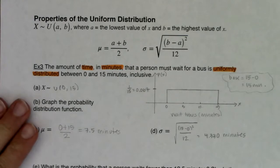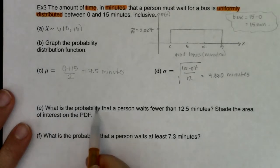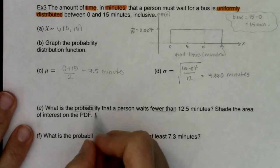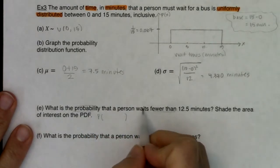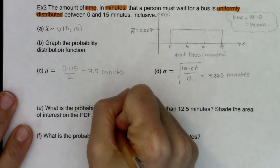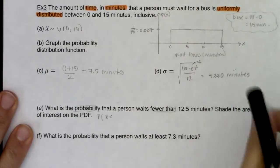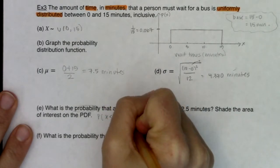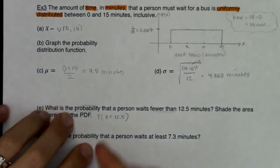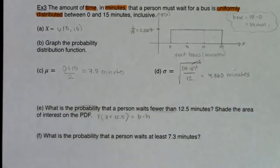Now let's look at probability questions. Part E asks: what is the probability that a person waits fewer than 12.5 minutes? Shade the area of interest on the PDF. I see 'probability,' so I need P with parentheses. Our variable is wait time, so I want P(X < 12.5 minutes). It's going to be a base times height formula — anytime you have probability on the uniform distribution, you use base times height.